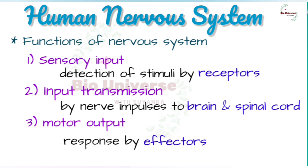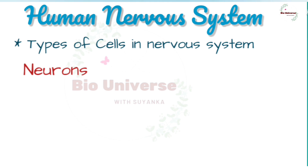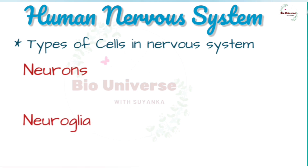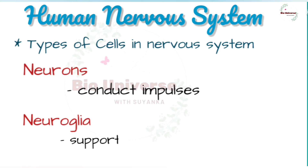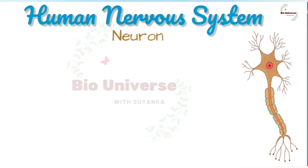Two types of cells constitute the nervous system: neurons and neuroglia. The neurons conduct impulses and the neuroglia support and protect the neurons. A neuron consists of a cell body called the cytone and two types of processes: dendrite and axon.